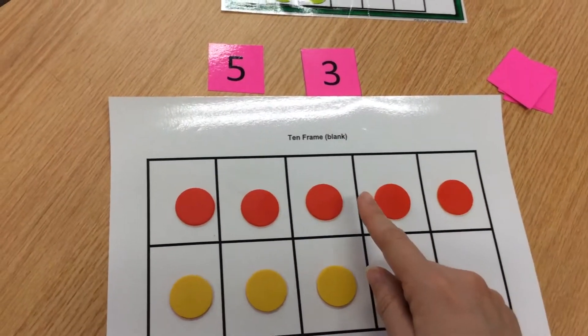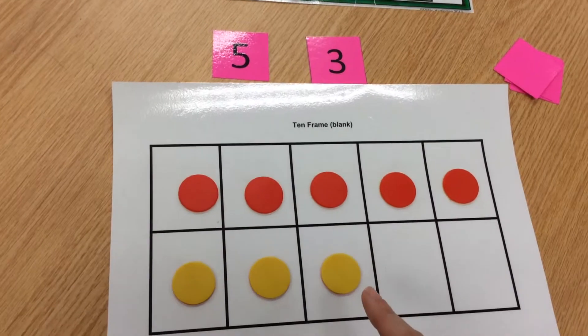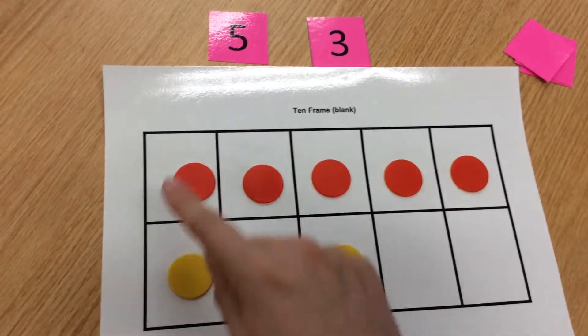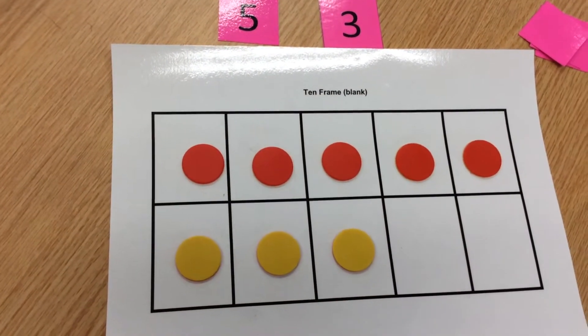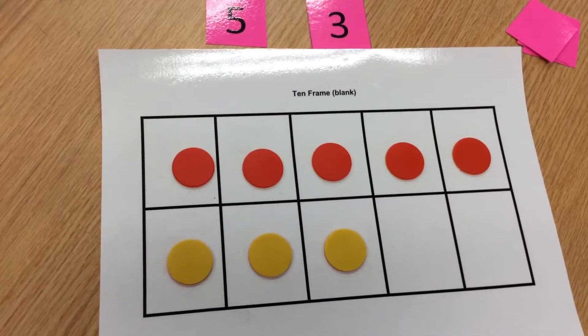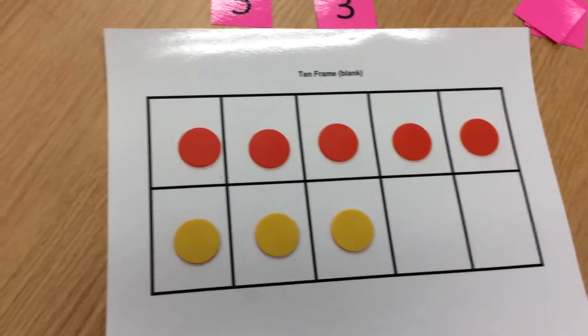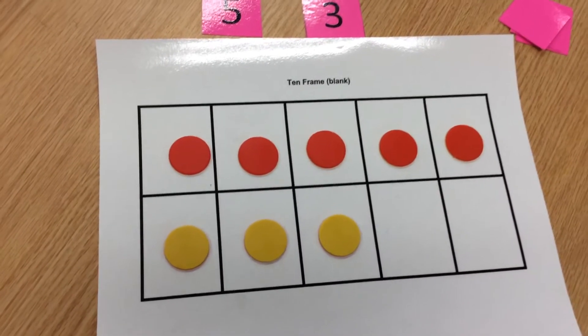I have five red, three yellow. Now I can count how many in all. I see that five plus three is eight.